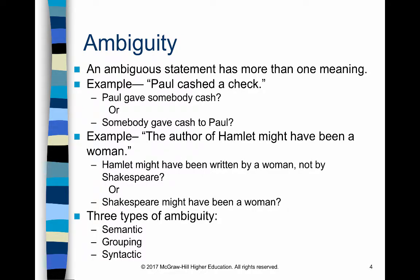Ambiguity occurs when someone uses a word or statement that can have more than one meaning, causing confusion because the reader or listener may mistakenly think the arguer is using one meaning when in fact they mean the other. For example, 'Paul cashed a check.' That statement has two separate meanings: Paul took someone's check and gave them cash in return, or Paul took a check to a bank and the bank gave him cash for it. Without more context, you might assume the wrong meaning.